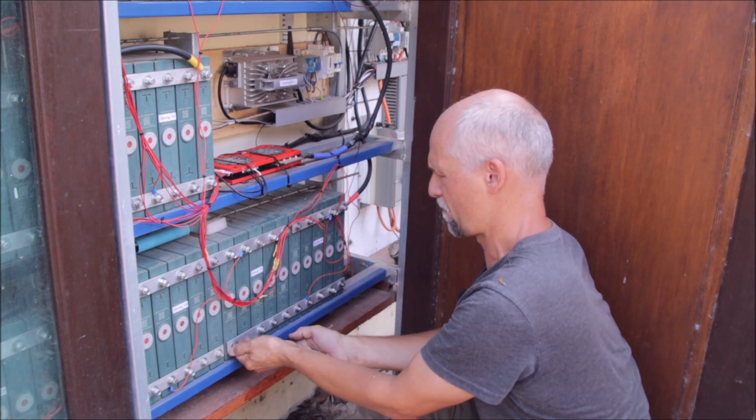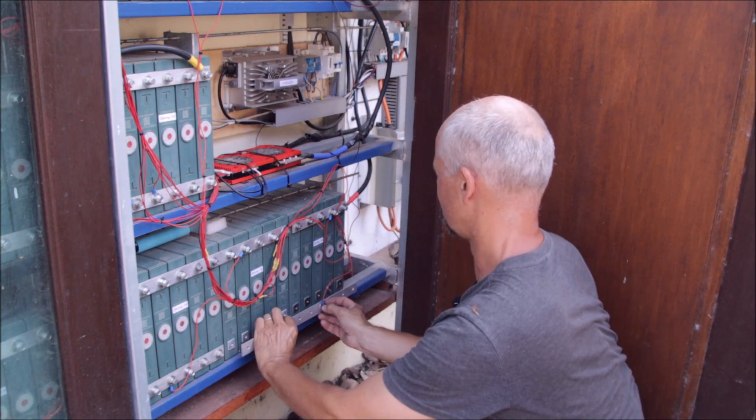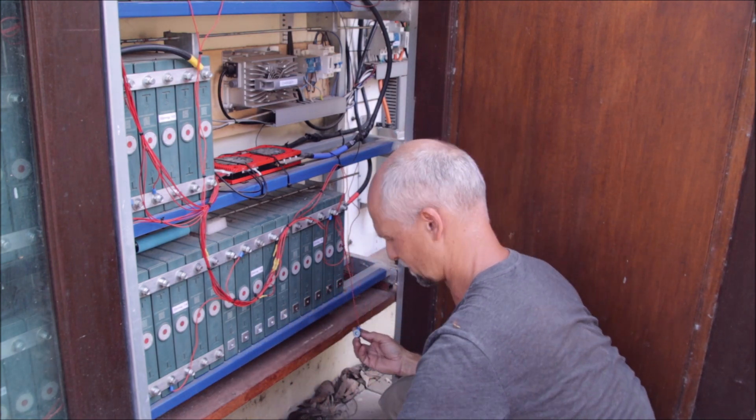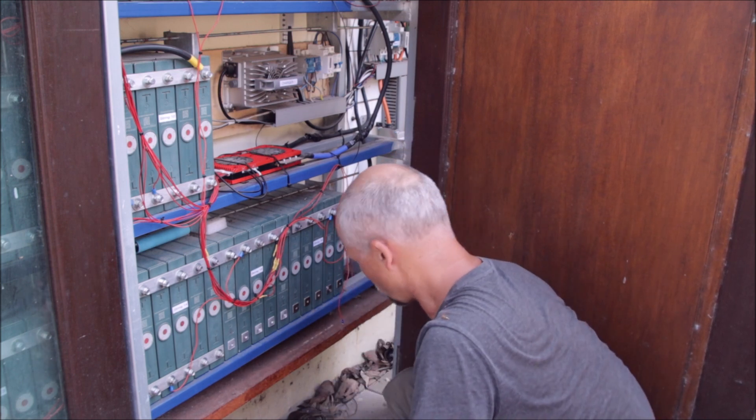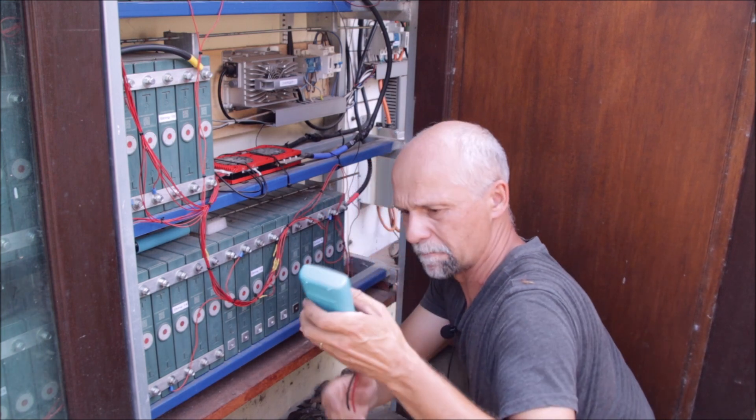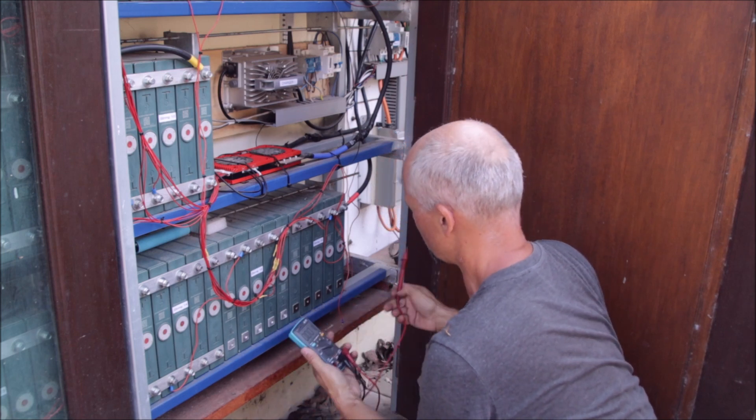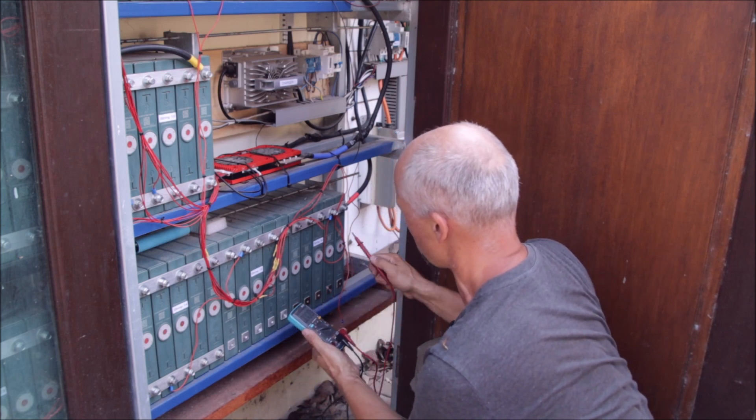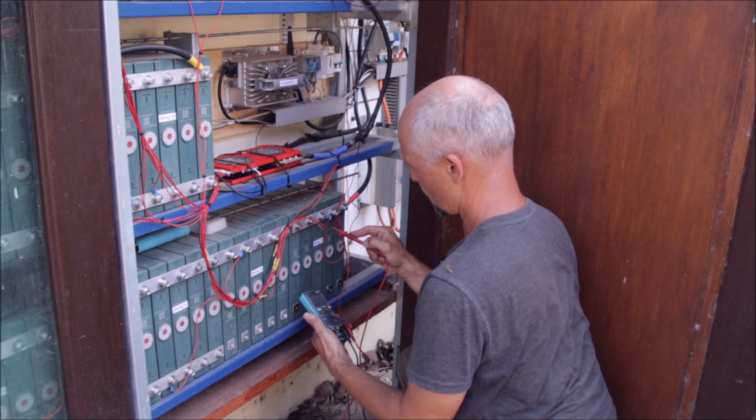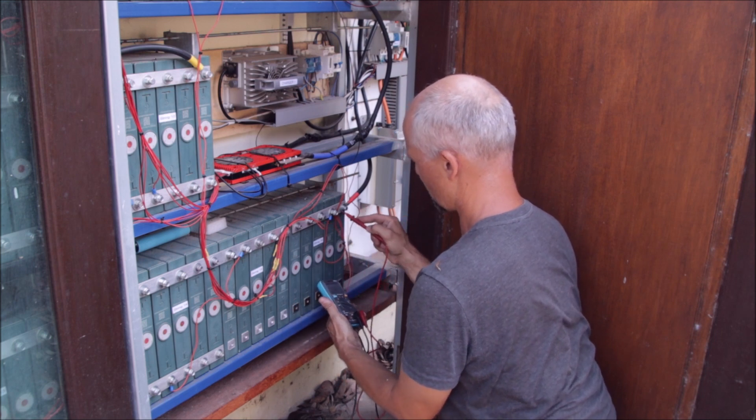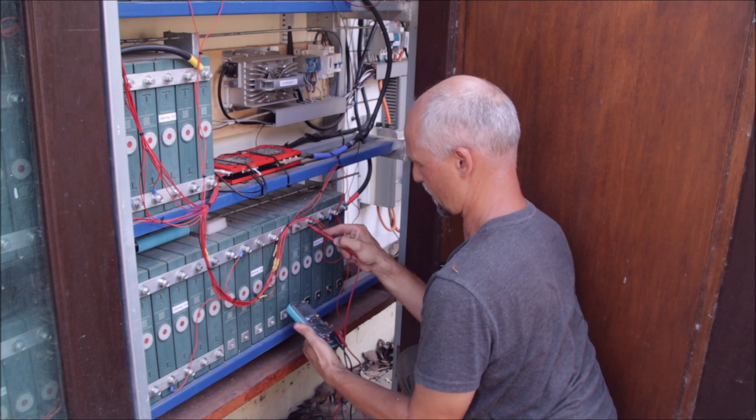All bolts are loose. Okay, so now we have all the cells individually disconnected. Let's already take a measurement. The most outer ones and the middle one are batch number one, and these two are from the second one.